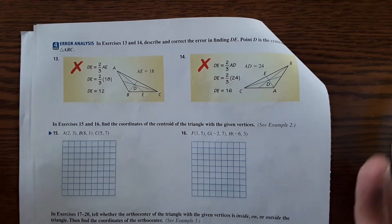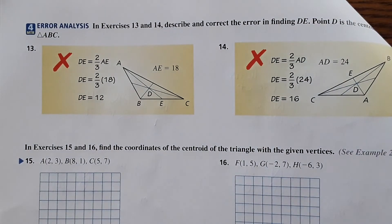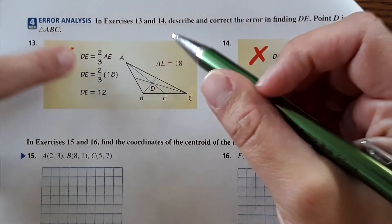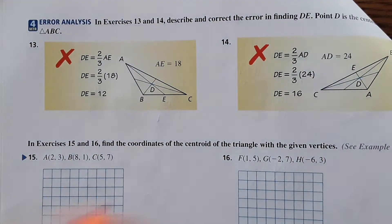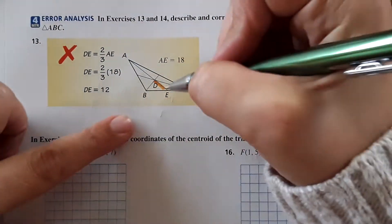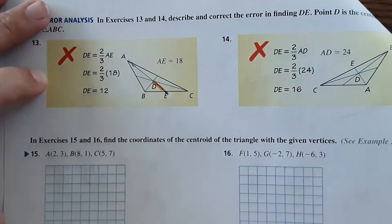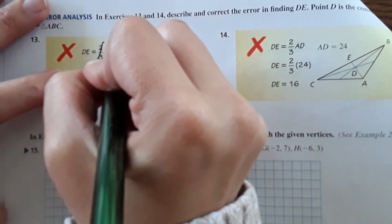Okay, describe and correct the error in finding DE. It says D is the centroid. Okay, so it's error analysis. We're looking for their mistake. Here it says DE is two-thirds of AE. Now DE is the shorter side, so it would be one-third. So the error is that this is supposed to be one-third of AE.